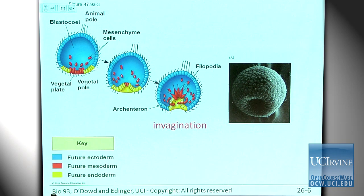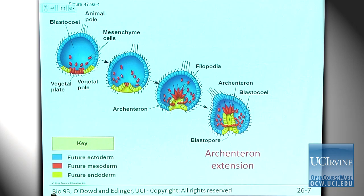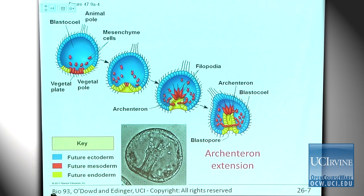Here is a scanning EM of a sea urchin embryo at this stage — it looks like an upside-down raspberry. This opening is called the blastopore and it's going to become the anus of the sea urchin. You can see the archenteron extending and those filopodia contacting the blastocoel wall and pulling it up.